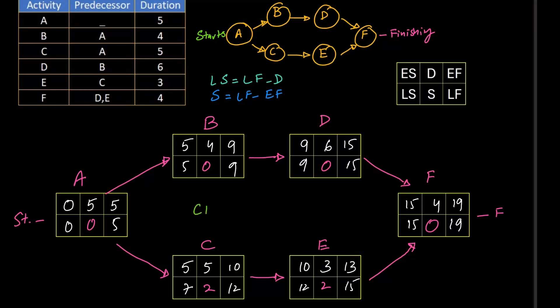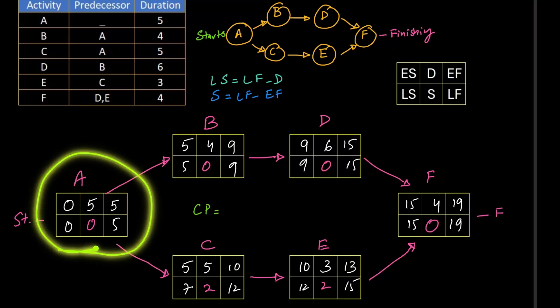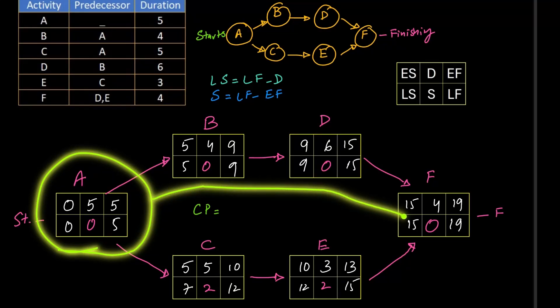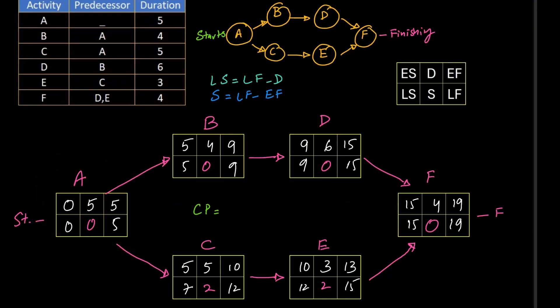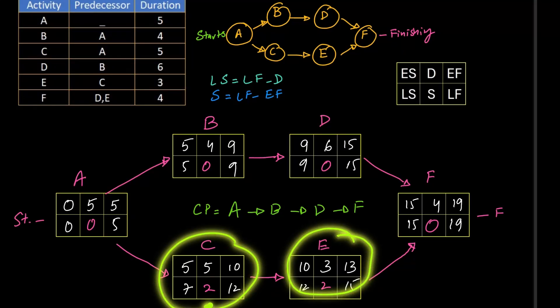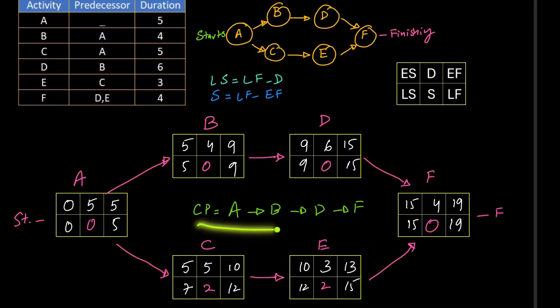We need to find the critical path for the project. And critical path is a straight line of slacks from start to end of the project. Here in this project, A, B, D and F, these are straight slacks, so the critical path will be A, B, D and F. Why we have not included C and E? Because they do not carry slack of 0 in them, so they can be excluded from this critical path.